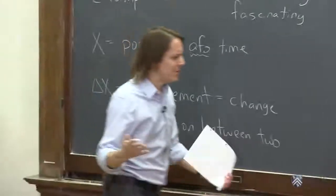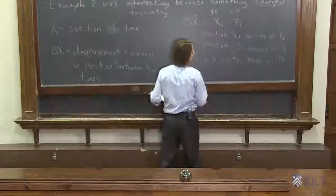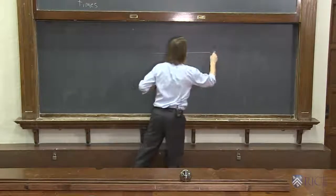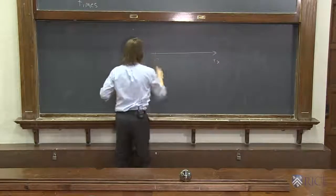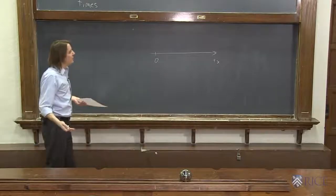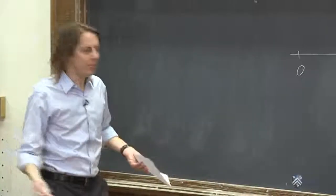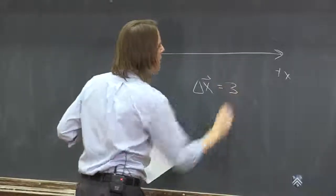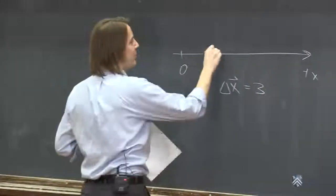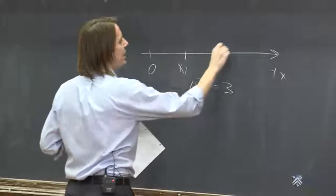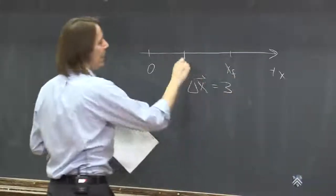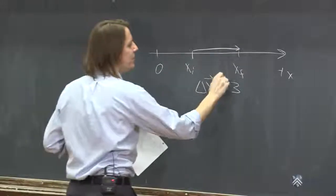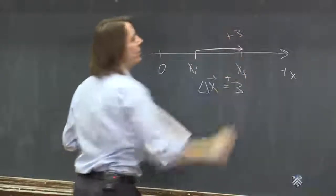So let's think, what does that really mean, that it's a vector in one dimension? What are we talking about here? And the way to think of it is, we could imagine, let's go back to our x-axis, right? Here's the origin. And if I give you a delta x vector, a displacement vector, say equal to 3, what does that mean? That means I was at some position x initial, and I had some position x final, and the distance between them is 3. And the fact that it's positive means it's to the right. So that would be plus 3.